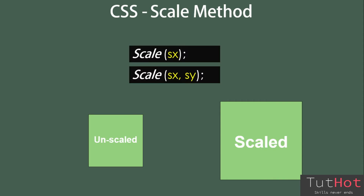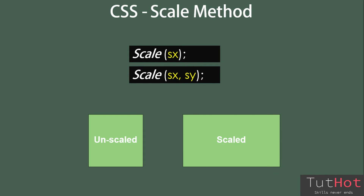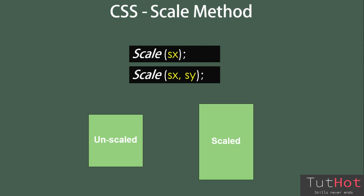Look at the following styling code. It takes unitless numbers as value: sx and sy. The sx value stretches the element in the direction of x-axis, that is horizontal. The sy value stretches the element in the direction of y-axis, that is vertical.